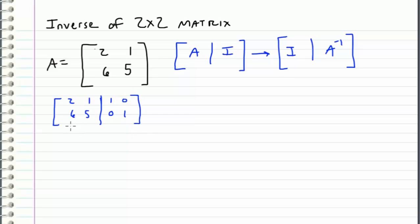So now all we need to do is reduce this side to the identity matrix which means we need to get ones in this position and this position and zeros in these positions.